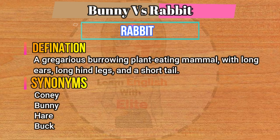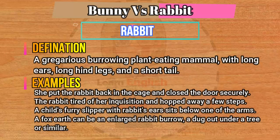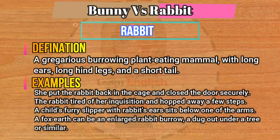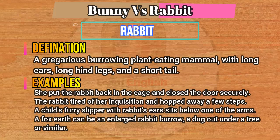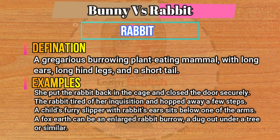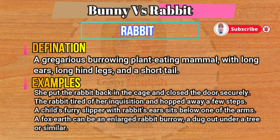And now let me show the examples of the word rabbit in sentences. She put the rabbit back in the cage and closed the door securely. The rabbit, tired of her inquisition, hopped away a few steps. A child's furry slipper with rabbit's ears sits below one of the arms. A fox earth can be an enlarged rabbit burrow, a dug out under a tree or similar.